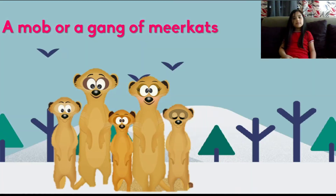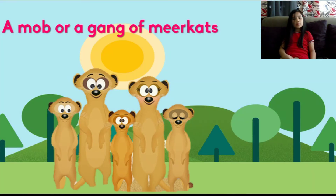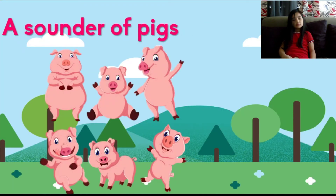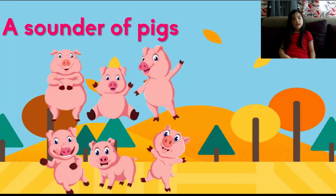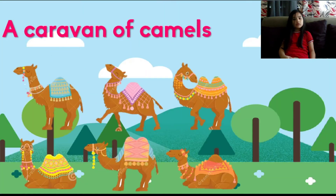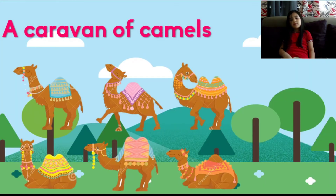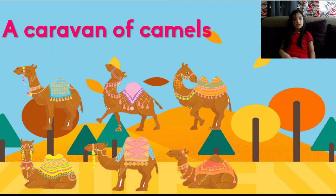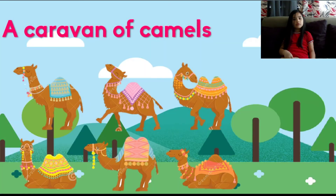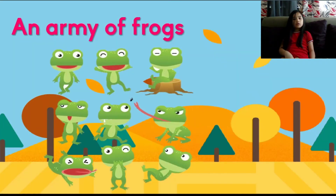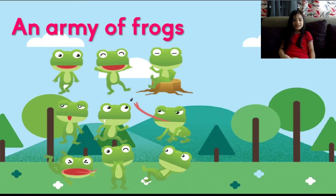A group of meerkats is called a mob or a gang. A group of pigs is called a sounder. A group of camels is called a caravan. A group of frogs is called an army.